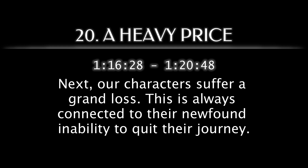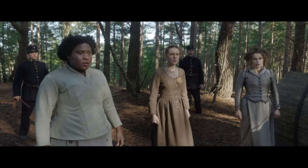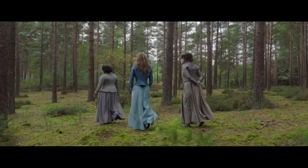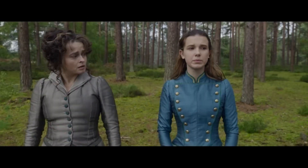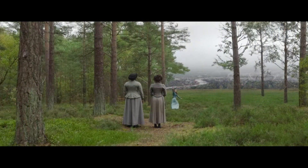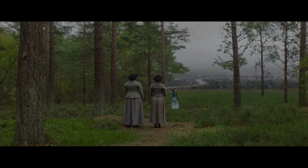Next, our characters suffer a grand loss — and this is always connected to their newfound inability to quit their journey. Grail catches the trio of chaotic good feminists and leaves them on foot to finish their escape. Eudoria admits to regretting how lonely her children tend to be, then separates from her daughter again — until Enola Holmes 3.